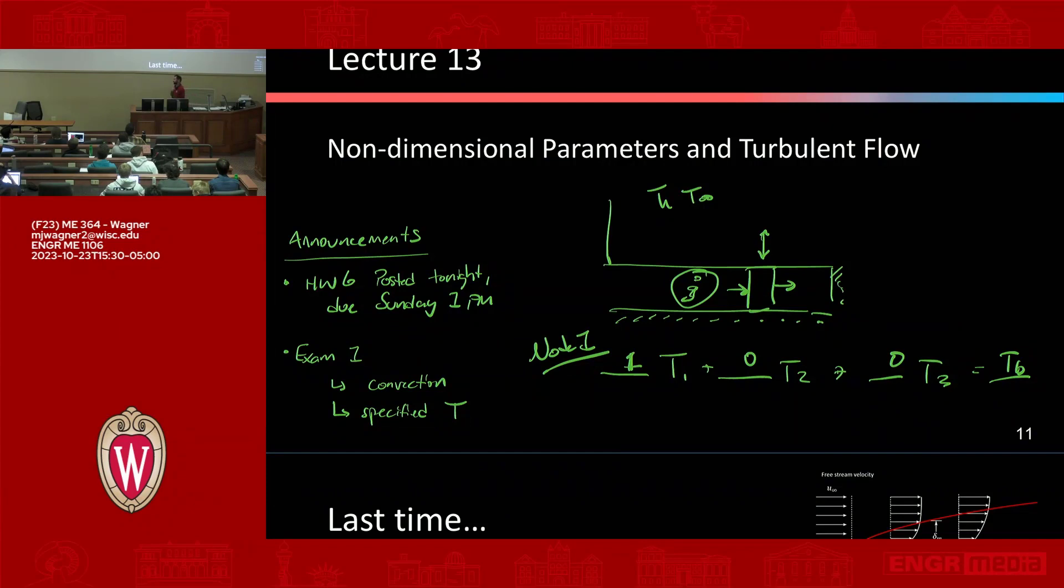So a lot of people are going through for node 1 and putting, solving for conduction and everything. Yes, there's conduction, but as far as the numerical model is concerned, we're specifying the value, so we don't need to go any further than that. The conduction is handled in the other nodal energy balances. Questions on this part of it?